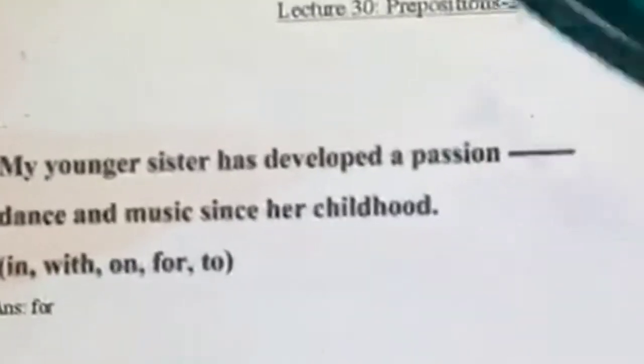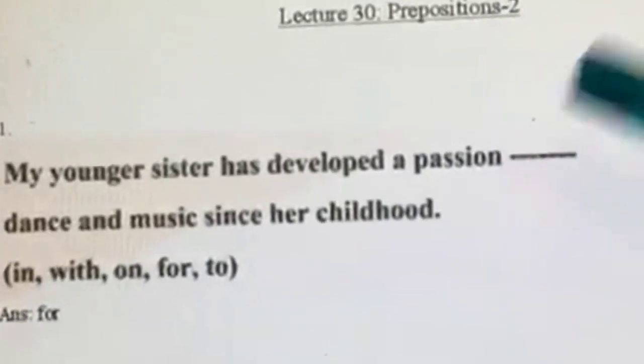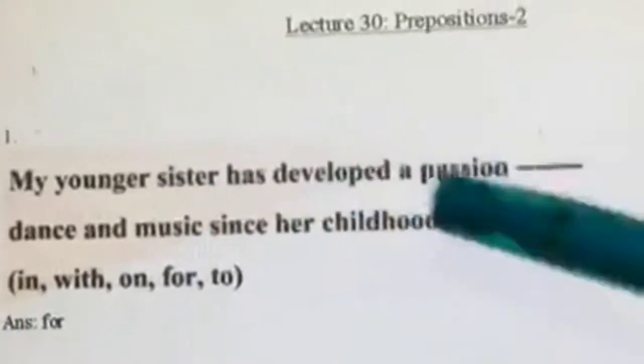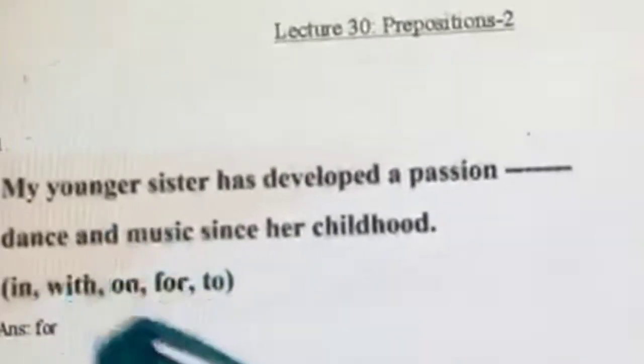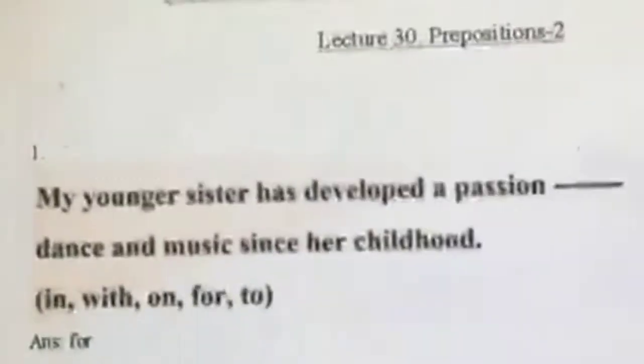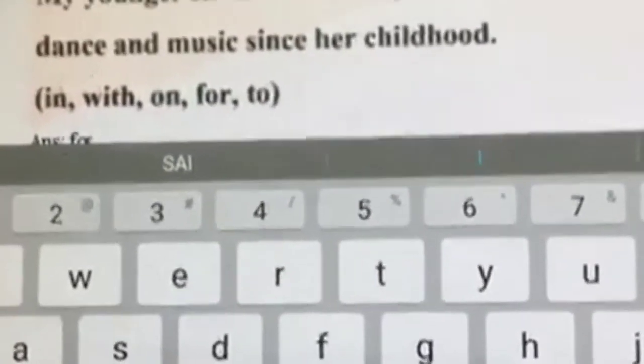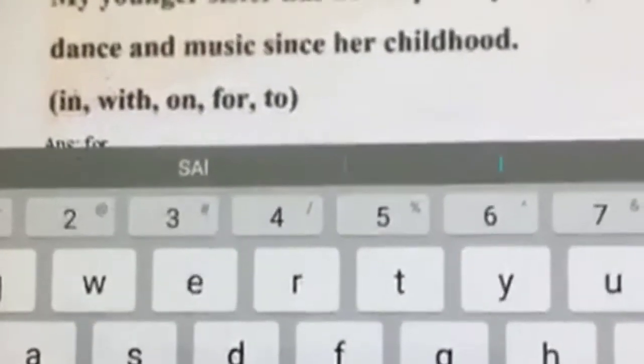My younger sister has developed a passion dash dance music since her childhood. It's not 'in,' 'with,' 'on,' or 'to' — it is 'for.' It's always a passion for something. I have a passion for cooking. You cannot say passion with cooking, passion in cooking, passion on cooking, or passion to cooking. Passion is always followed by the preposition 'for' — always remember that.